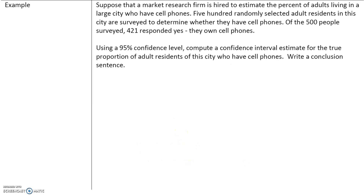Here's an example. Suppose a market research firm is hired to estimate the percent of adults living in a large city who have cell phones. 500 randomly selected adult residents in the city are surveyed. So we already know that our sample size n is equal to 500. Of the 500 people, 421 responded yes — that is the number of successes, because we want to figure out how many adults have a cell phone.